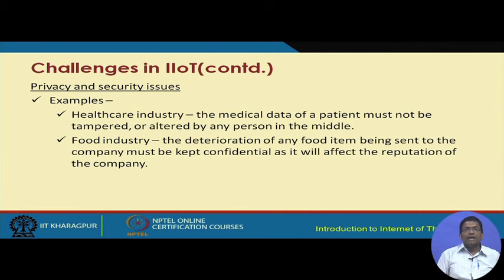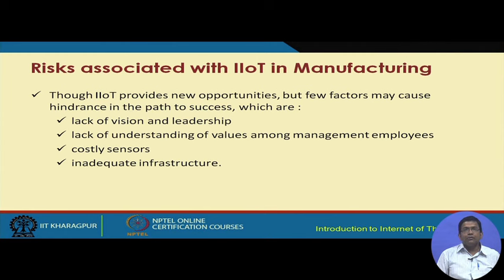For example, in the healthcare industry, the medical data of a patient must not be tampered with or altered by any person in the middle. In the food industry, the deterioration of any food item being sent to a company should be kept confidential, as it will affect the reputation of the company. These are very important privacy and security challenges in building IIoT solutions.